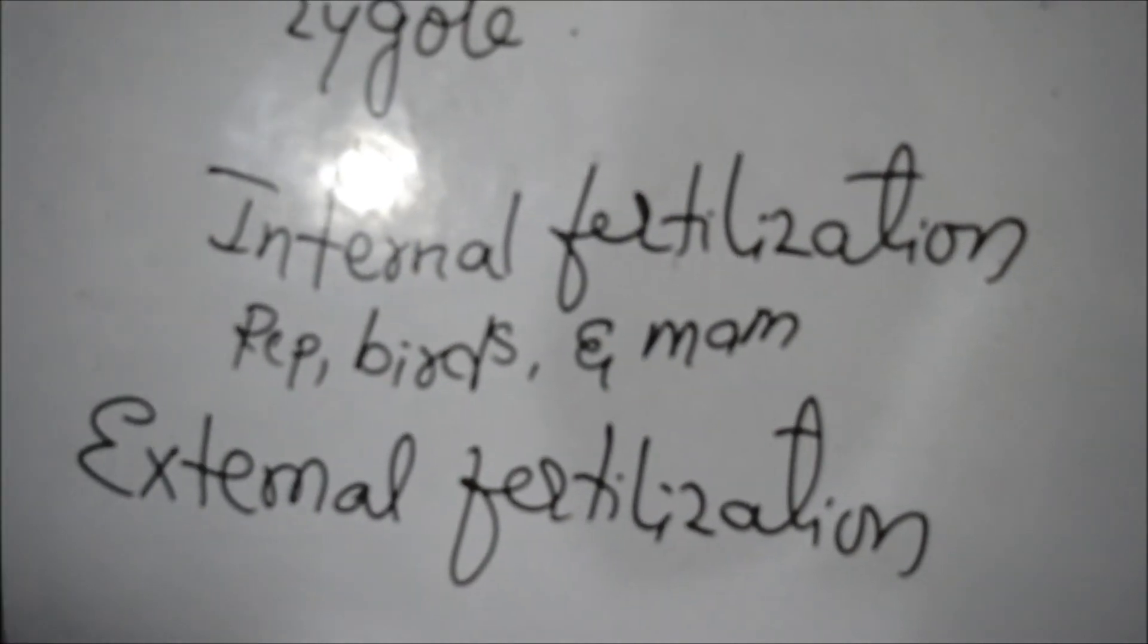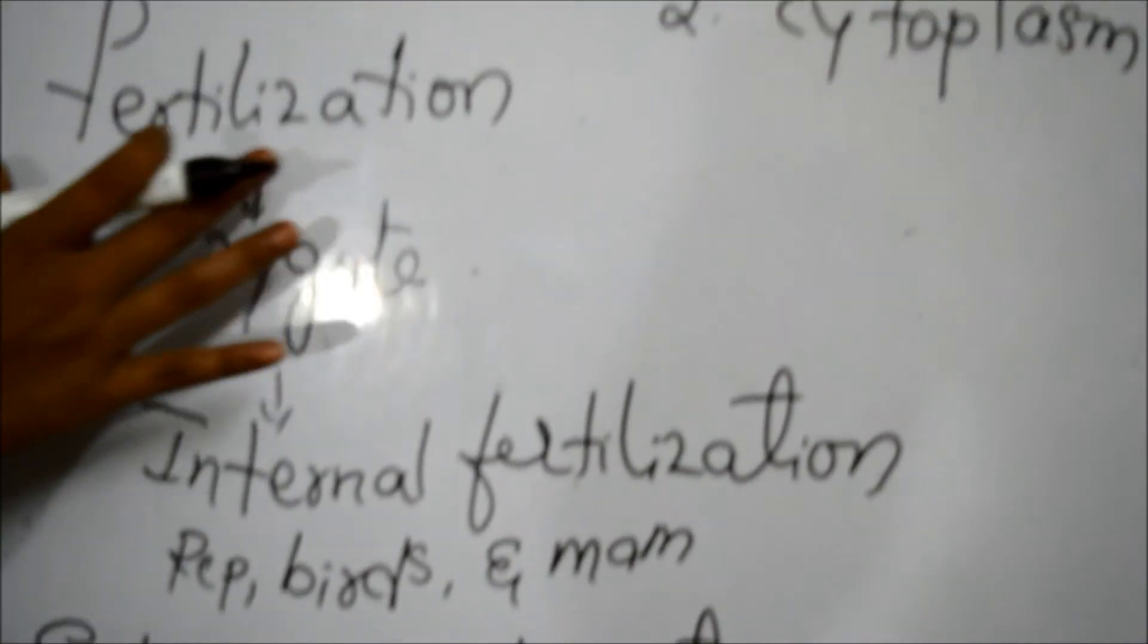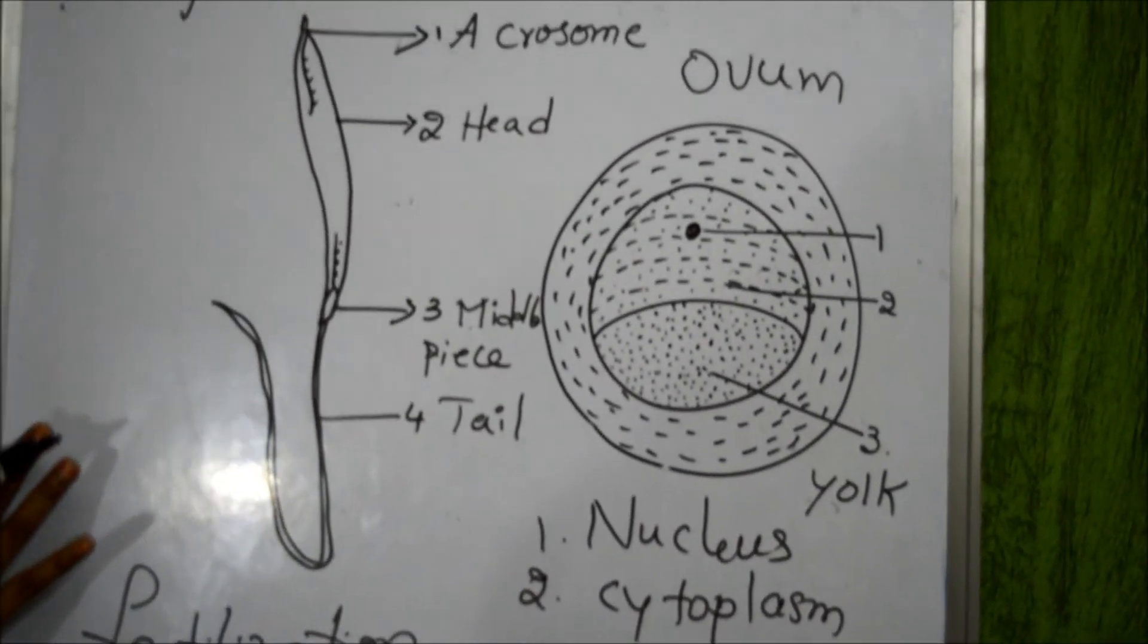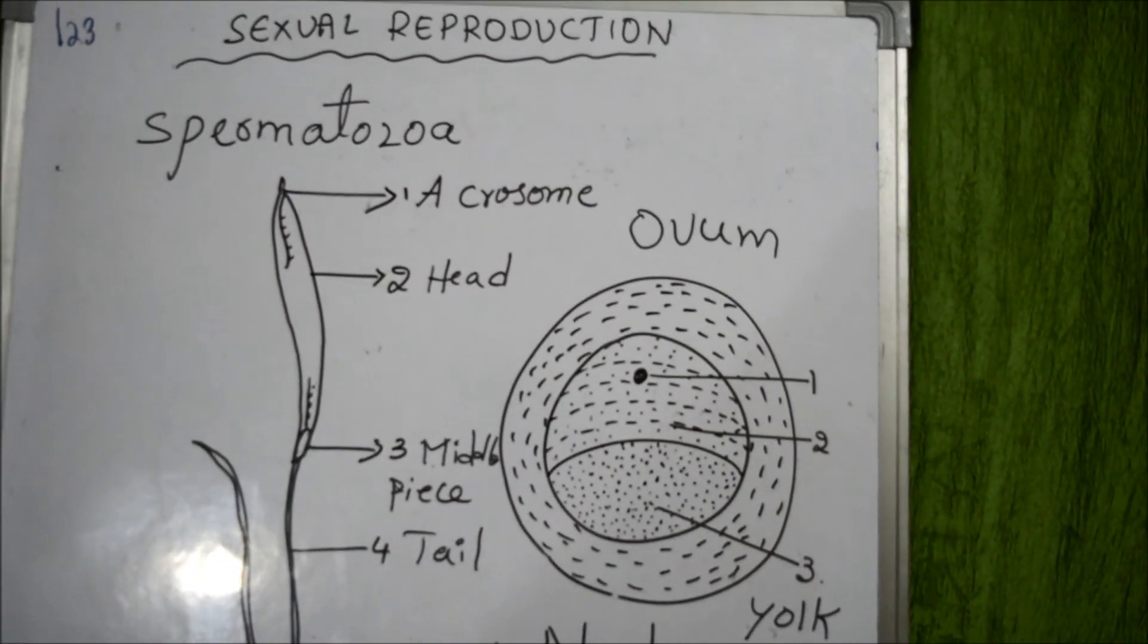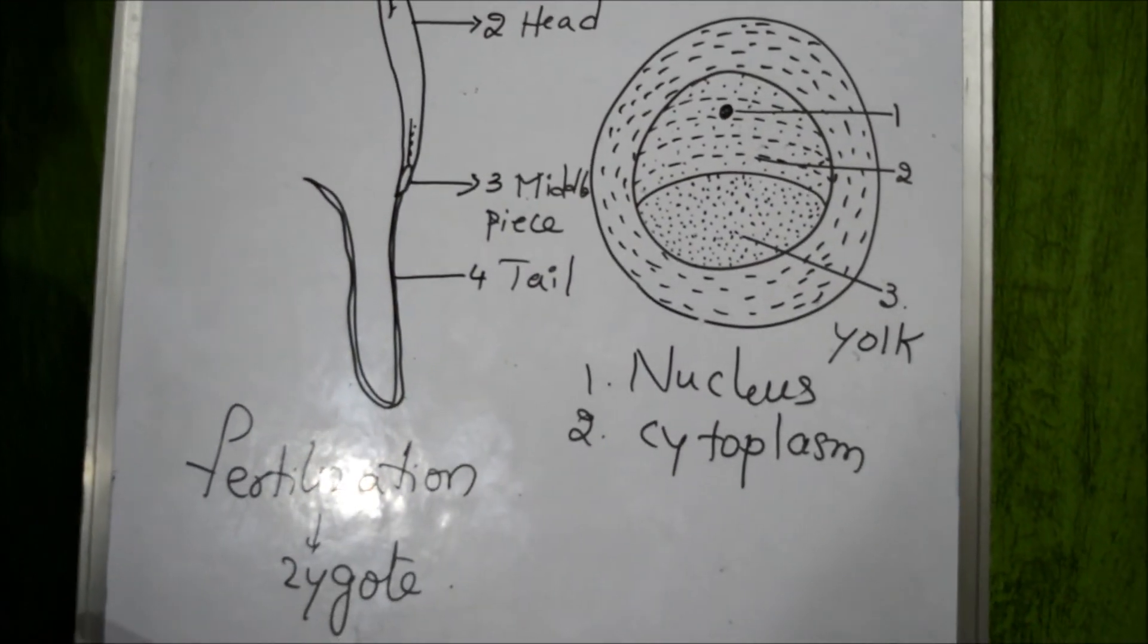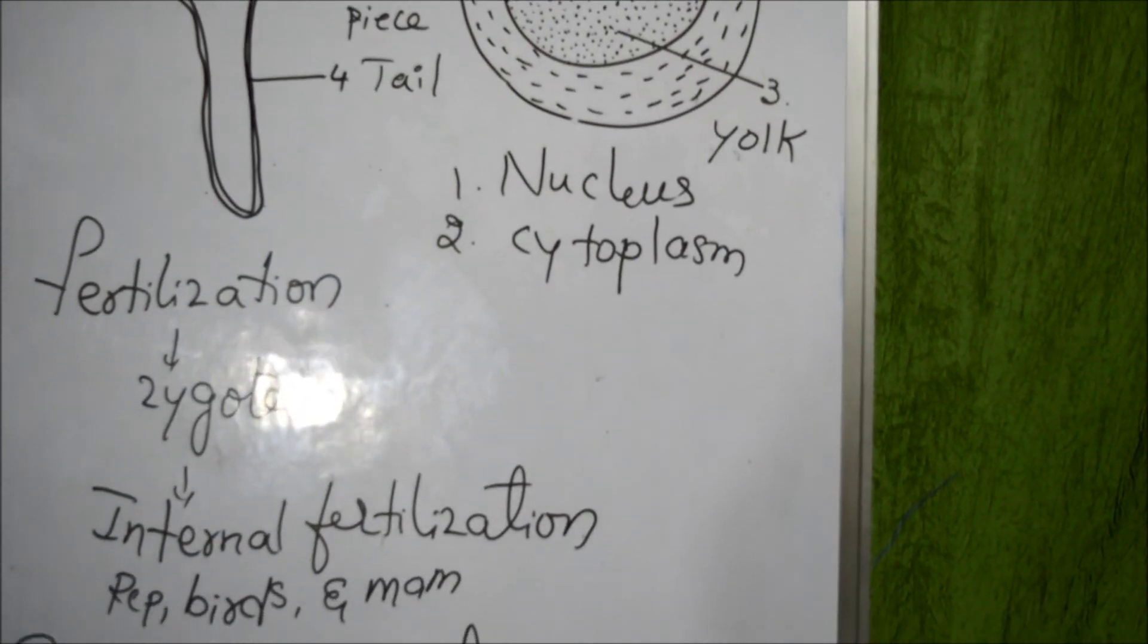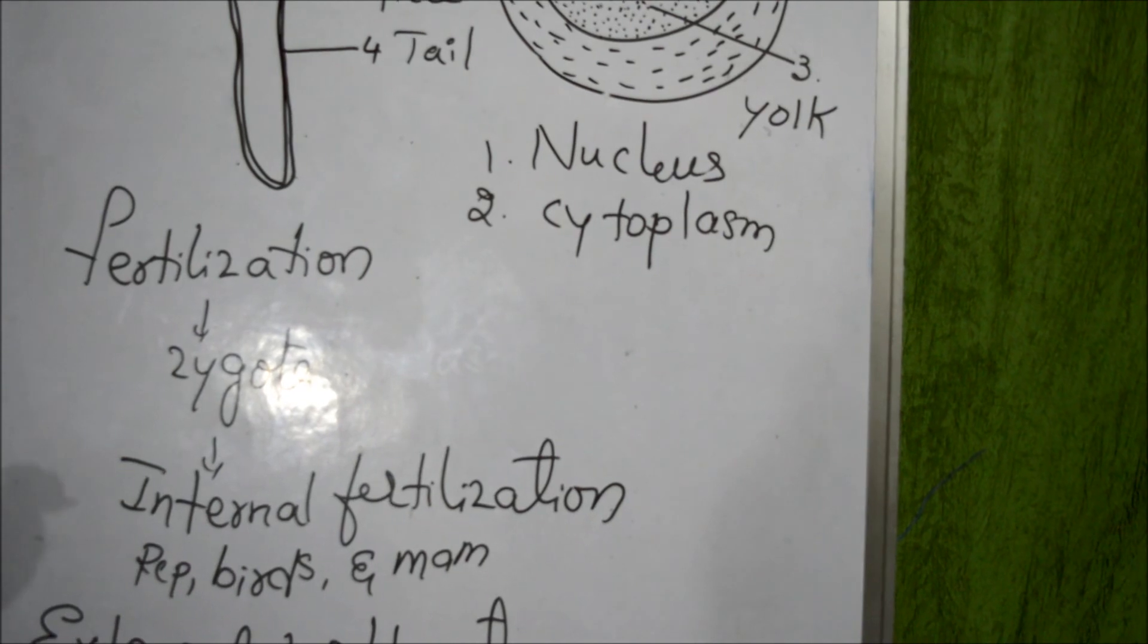This fertilized egg develops into a new organism from this process. This is about the gametes which are present in male and female organisms. From these gametes, they fuse to form into zygote. This zygote takes place in some female organisms as internal fertilization, in some as external fertilization. After this, they develop into a new organism.